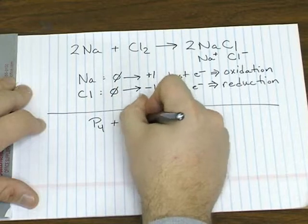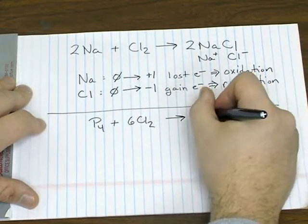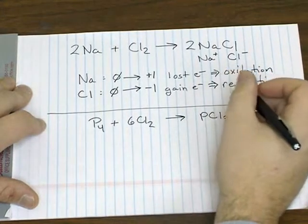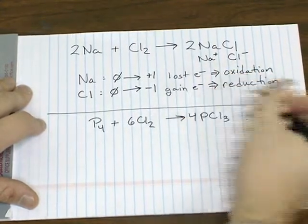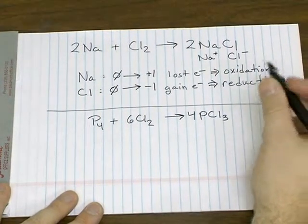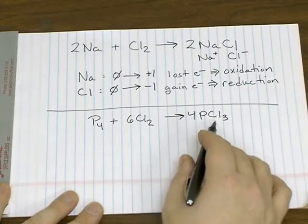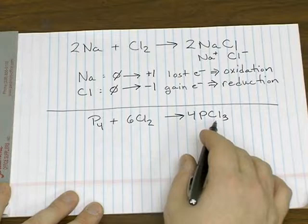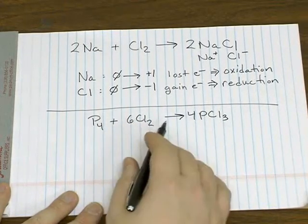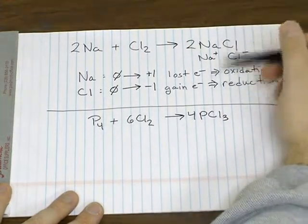For example, look at the reaction between phosphorus and chlorine to give you phosphorus trichloride. So in this case, we're forming a covalent compound. There aren't any ions involved. But yet this could still be a redox reaction, even though it's not as obvious to start with as this one.